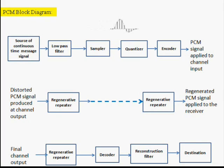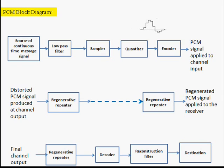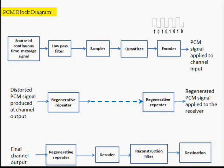The next stage is the quantizer. Quantization is the process in which the discrete values are approximated and changed into levels, giving a new representation of the signal which is discrete in both time and amplitude. Encoding is the last stage of the PCM transmitter, where the obtained levels are changed into bits.